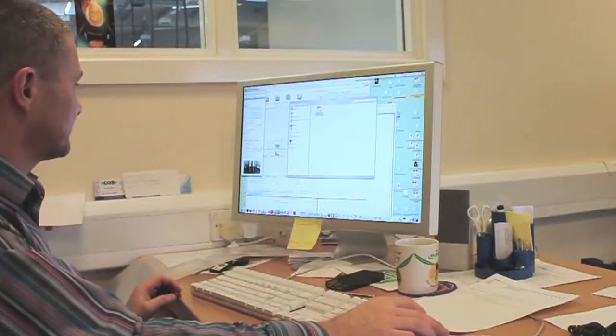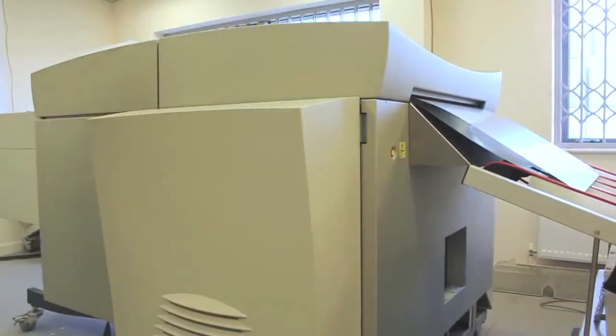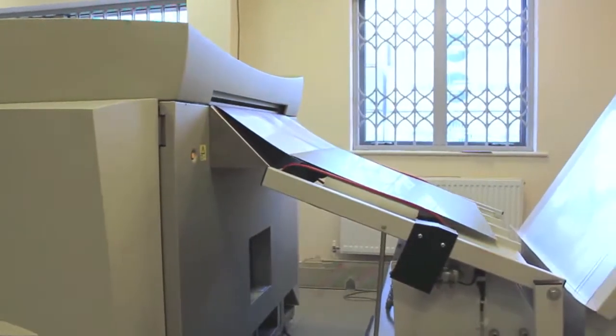Images are processed on screen to check for errors in a process known as proofing. When the images have been approved they're sent to a plate etcher.